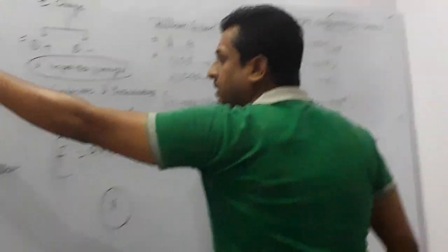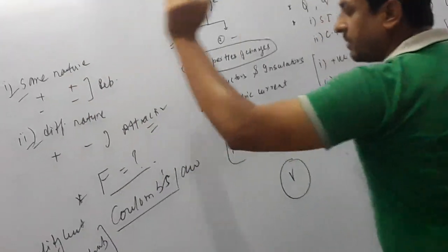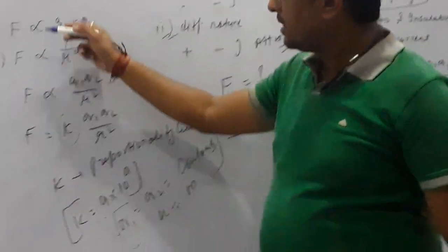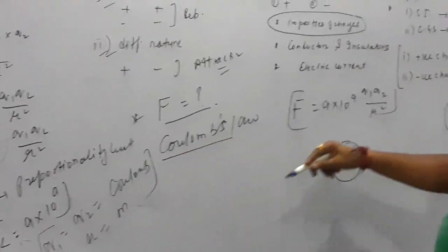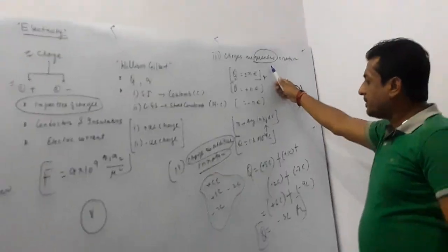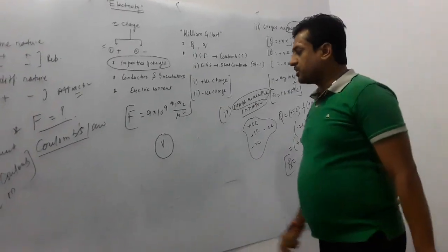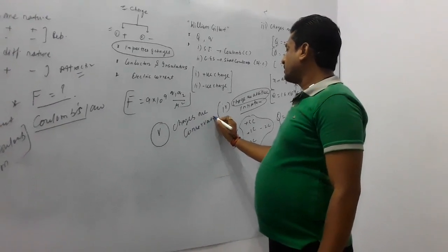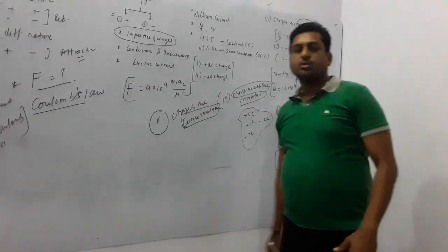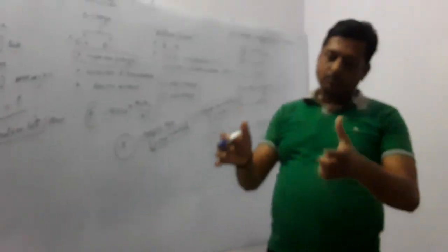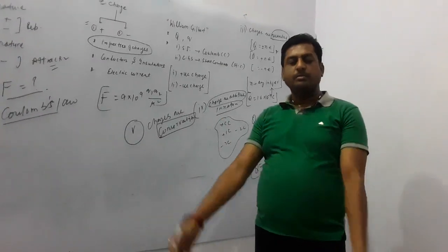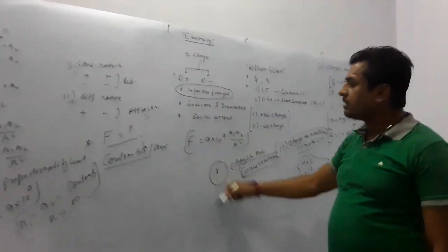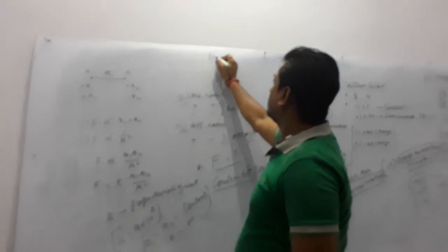Property five: charges are conserved. Conserved means charge can neither be created nor destroyed. Whatever amount of charge is associated with any body will always be conserved. This is the property of conservation of charge. If you know all these things, then only you can understand the concept of electric current.